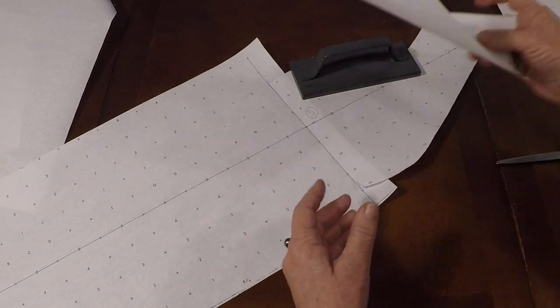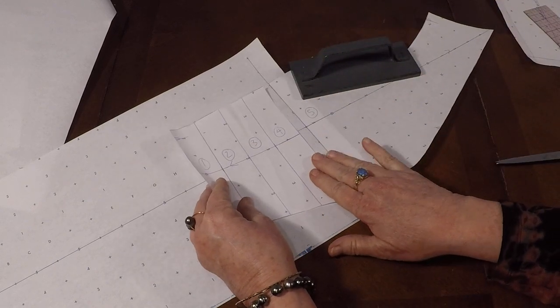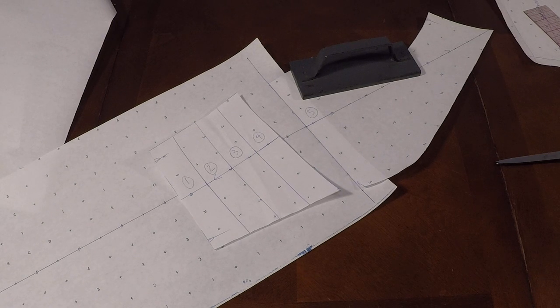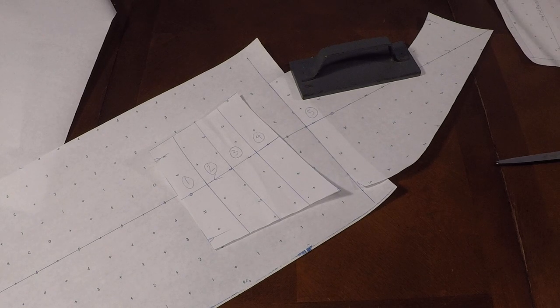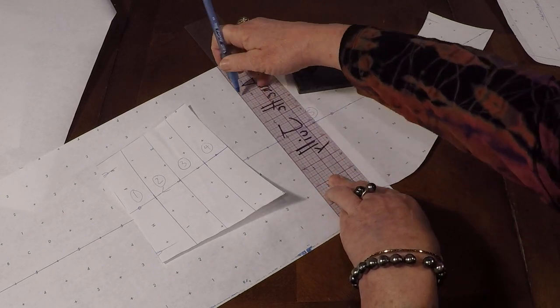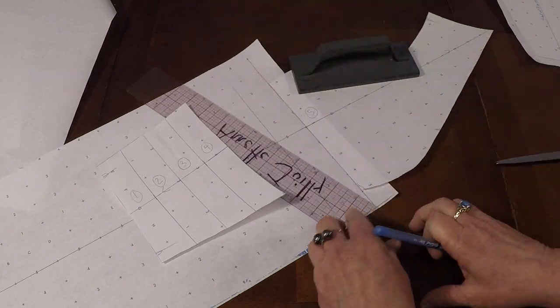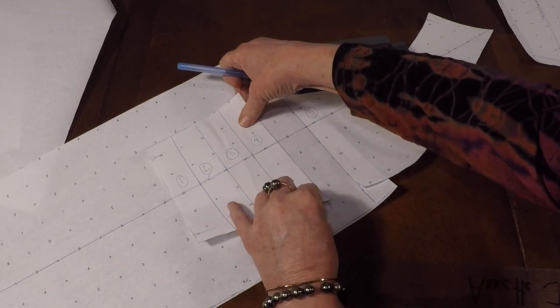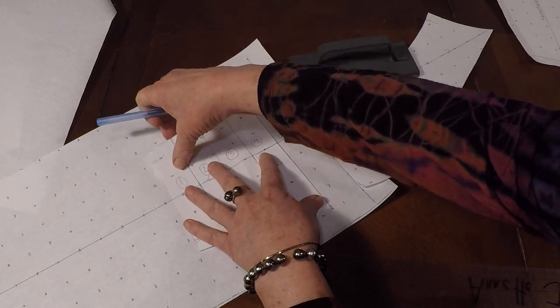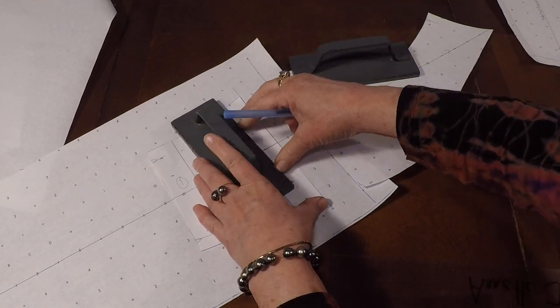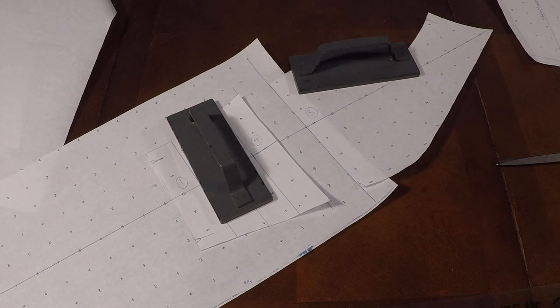Tape it in place. And then now we can go ahead and spread this. Instead of placing it back like this, we're going to put fullness, added fullness, into the pattern. So as the pattern maker, designer, it's your choice. How much do you want to put? I'm going to add an inch and a half. You could add one inch, two inches. I chose an inch and a half. I'm going to go ahead and tape this back down once I have this in place, lining up my grain line, and then we'll cut off the next piece.